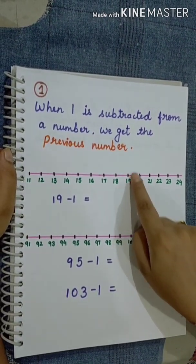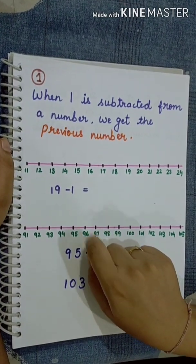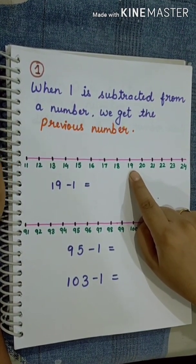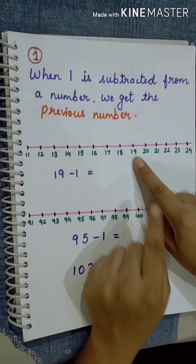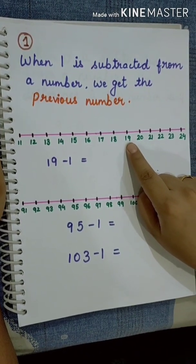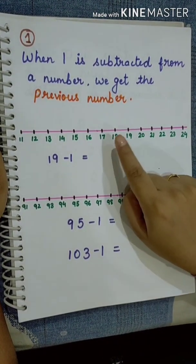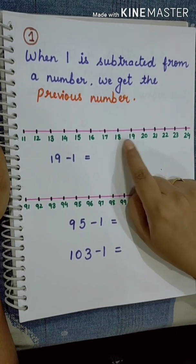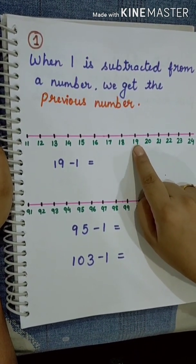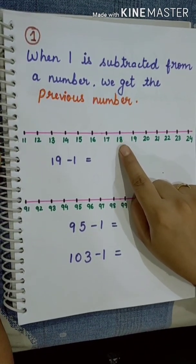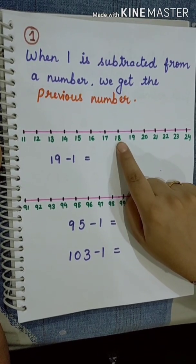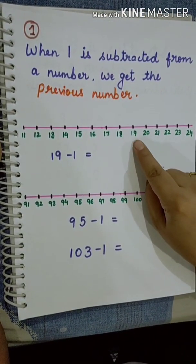Here is number 19. So we have to subtract 1. Subtract means less. So one less than 19 is 18. When we subtract number 1 from 19, we get 18. And here you can see, number 18 is the previous number of number 19.